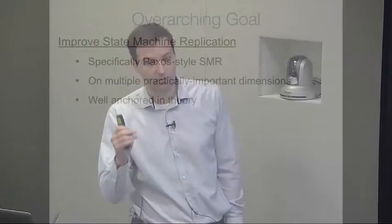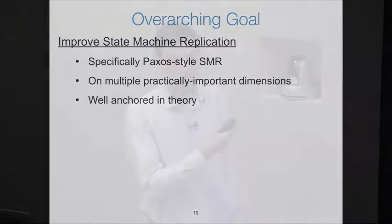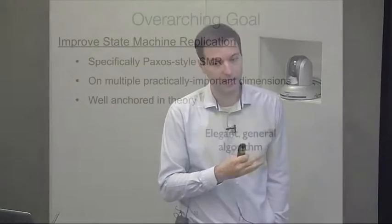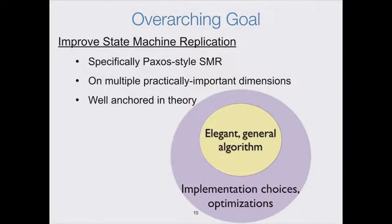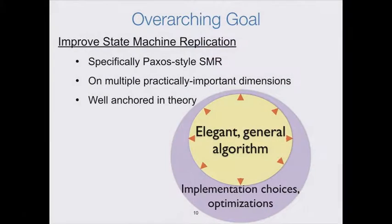This brings me to the overarching goal of my thesis work. I want to improve state machine replication, focusing on Paxos-style SMR — that is, failures are non-byzantine and protocols use quorum consensus. I want to improve SMR on multiple practically important dimensions, but also in a way that's well-anchored in theory. A Paxos system has essentially two components: the Paxos algorithm itself, which is the core algorithmic component, and the implementation considerations. I want to expand this algorithmic core to include more practical implementation details.